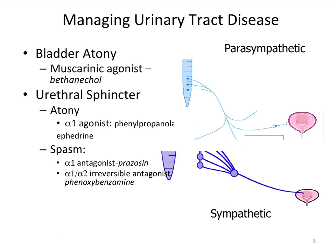Let's look at managing urinary tract disease with autonomic drugs. The conditions to focus on are bladder atony — meaning the bladder is weak and doesn't contract well — and the urethral sphincter. Relevant receptors are muscarinic receptors on the parasympathetic side and alpha-1 receptors at the sphincter.